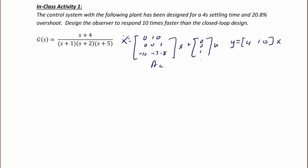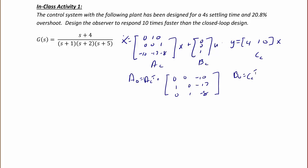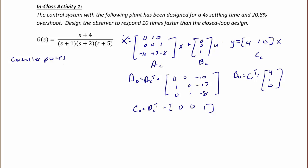So this gives us A_C, B_C, and C_C. The observer A matrix equals the transpose of the controller A matrix: [0, 0, -10; 1, 0, -17; 0, 1, -8]. The observer B matrix is the transpose of the controller C matrix: [0, 0, 1]. The observer C matrix is the transpose of the controller B matrix: [0, 0, 1]. The controller poles, based upon the design specs, are -1 ± j2 and -4.